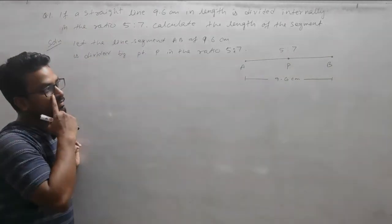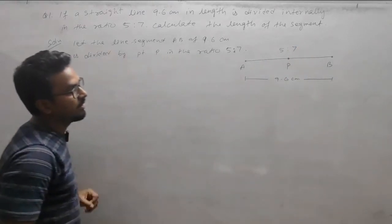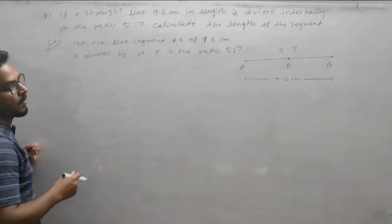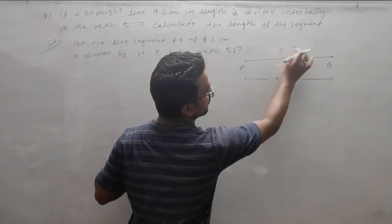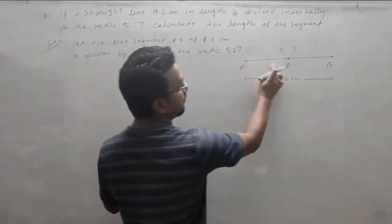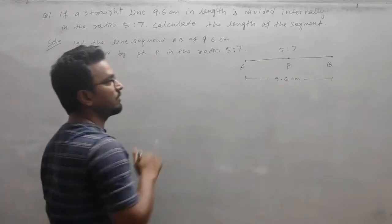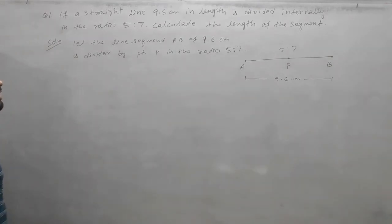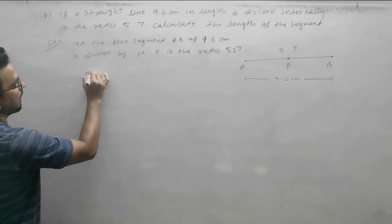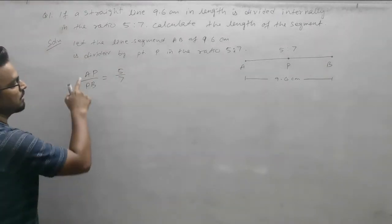We need to find the length of AP and PB. So internally, we have AP by PB equals 5:7. For internal division, AP/PB equals the given ratio 5:7. Let the line segment AB of 9.6 centimeters be divided by point P in the ratio 5:7, so AP/PB equals 5/7.